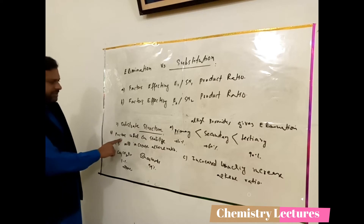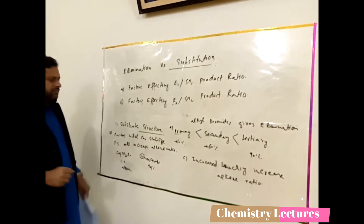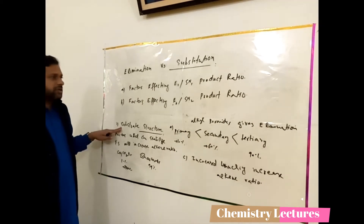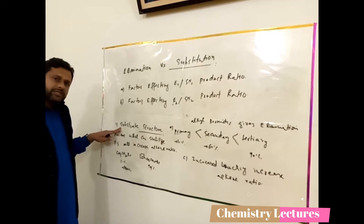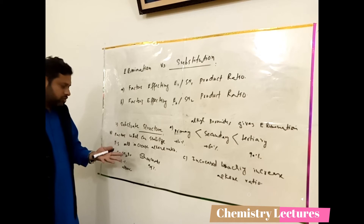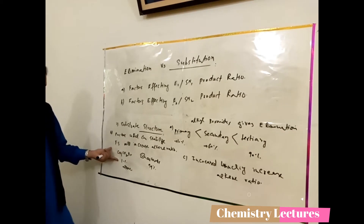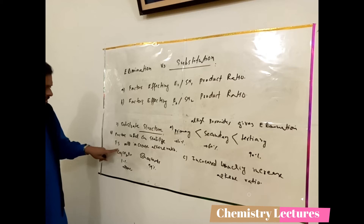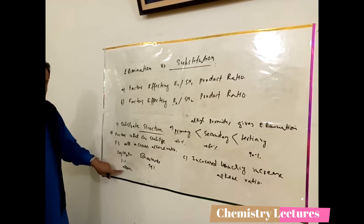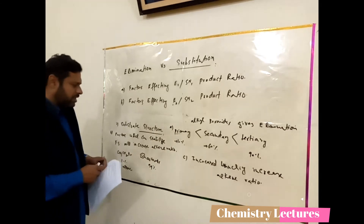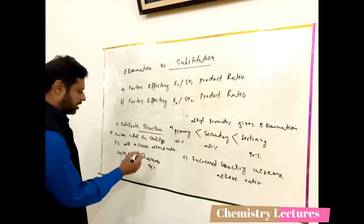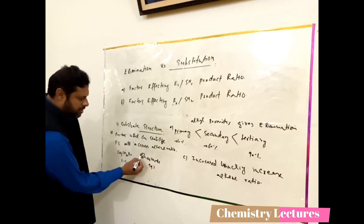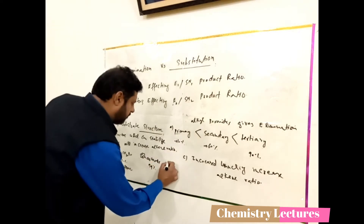The second substrate structure factor involves stabilization of the transition state, which increases the alkene ratio. For example, when a carbocation is formed after bromide removal and it is not stabilized by any factor, we get only 1% alkene ratio. But when bromine is removed and the carbocation formed is stabilized by a benzene ring, we get 99% alkene ratio.